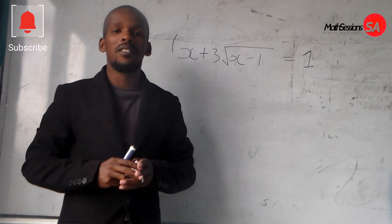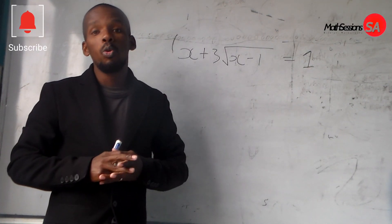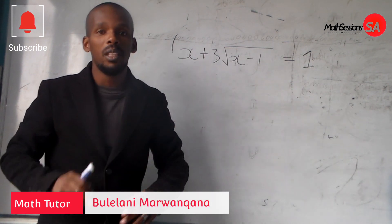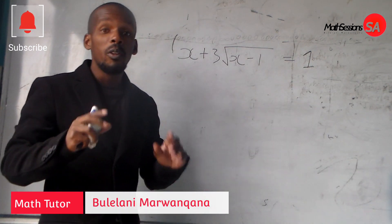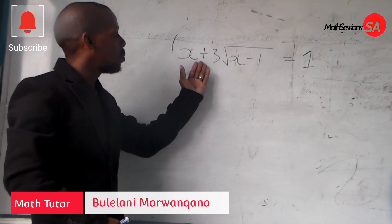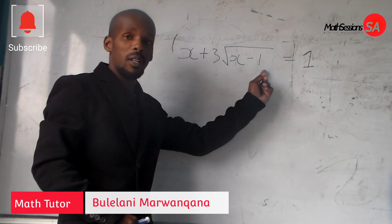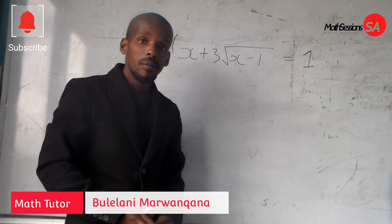Hello guys, welcome again to MedSessions USA. Today we are going to do Grade 11 technical mathematics. We are going to solve for the value of x, where we are having x plus 3 square root of x minus 1 is equal to 1.